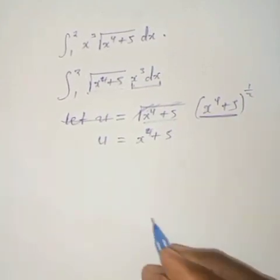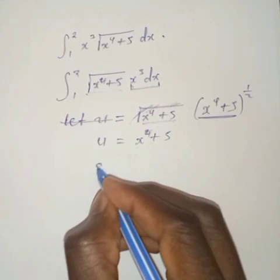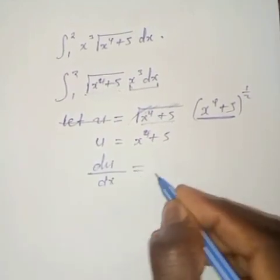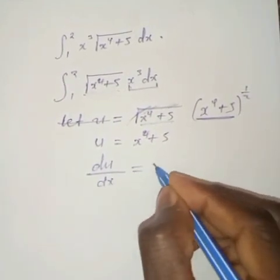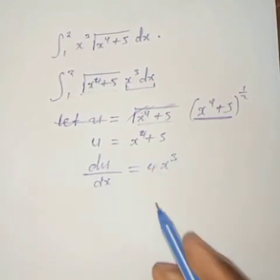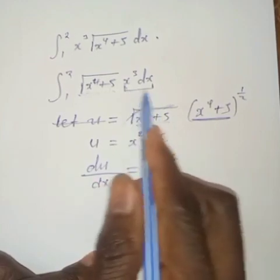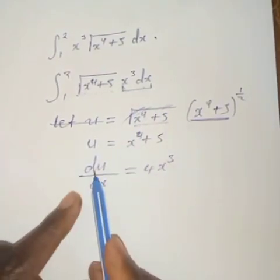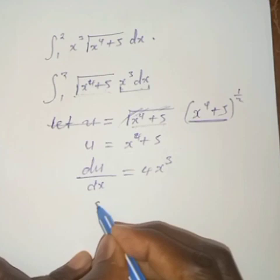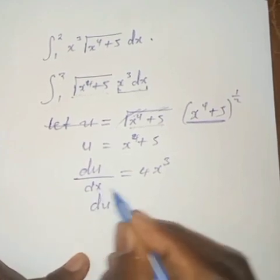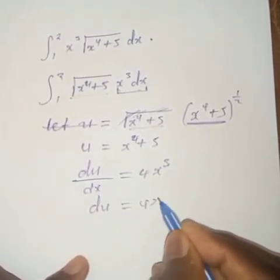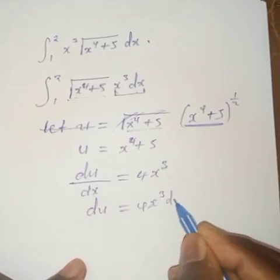Once you do that, you can differentiate this part by saying du/dx is going to be equal to 4x to the power 3. To relate this to the integral, make du the subject of formula by multiplying through, so we get du equals 4x to the power 3 dx.